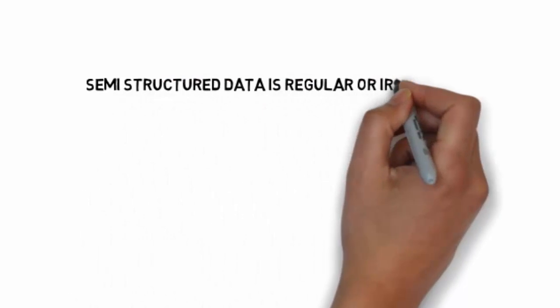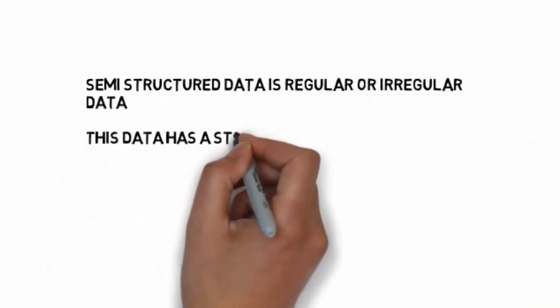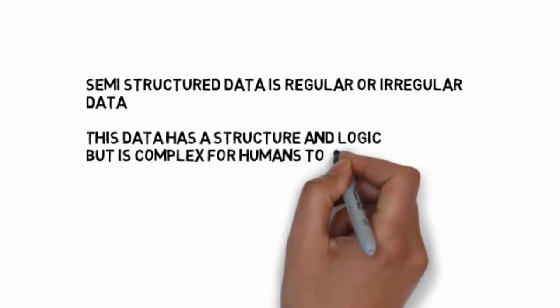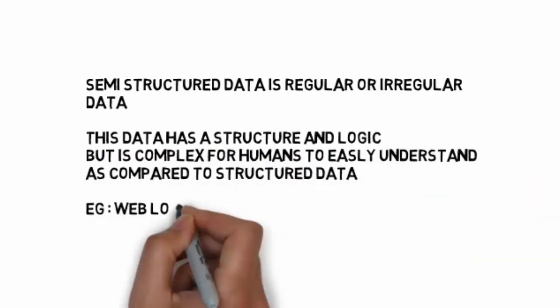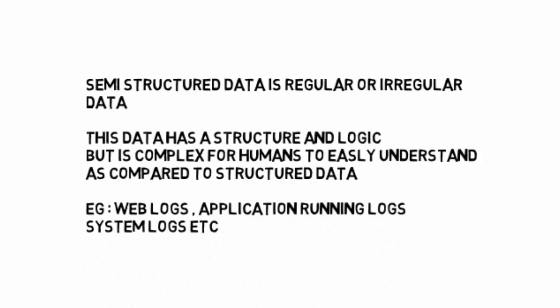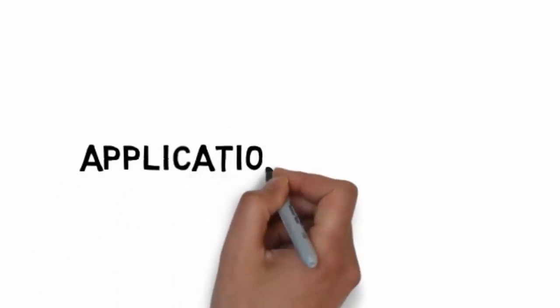Semi-structured data is regular or irregular data that has a structure and logic. There is some logic behind the data which can be understood, but it's complex for humans compared to structured data. Examples include web logs, application logs, or system logs. Such data over days or hours generates huge amounts with various parameters not easy for humans to understand but easy for computers. This data is not as irregular as unstructured data and is known as semi-structured data.